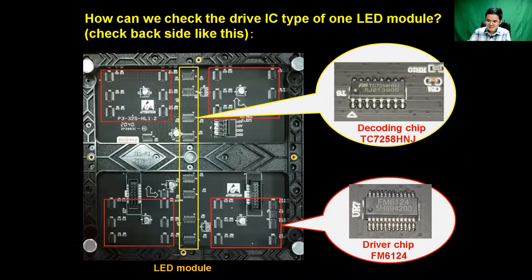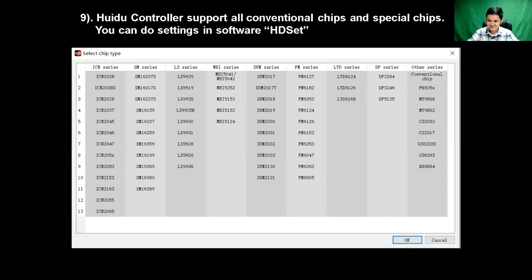Sometimes if you are unable to read the information on the IC, then you have to ask your supplier. Our Huidu controllers support all conventional chips and most special chips. You can see the screenshot of our software settings — in our software you can select the chip type and do settings in HD Set or HD Player directly.